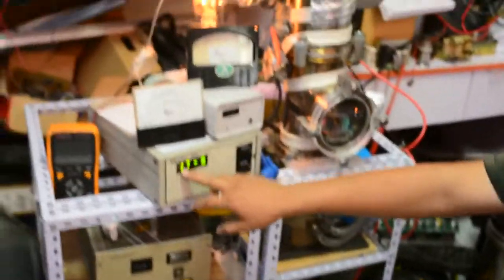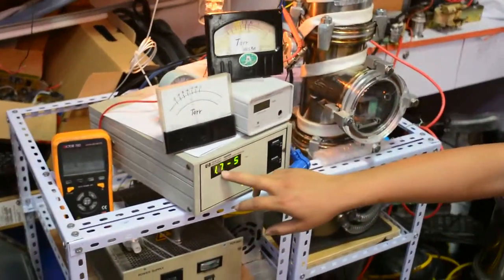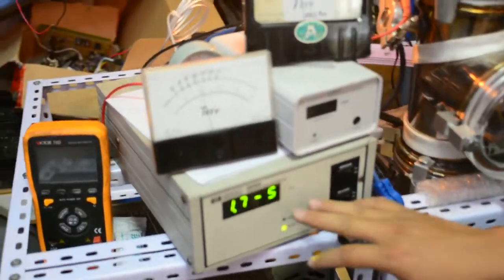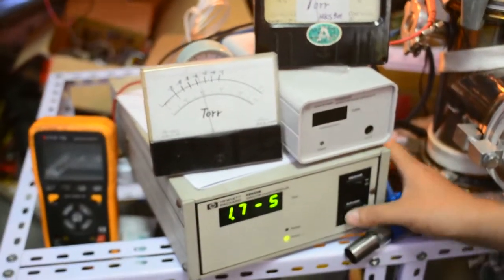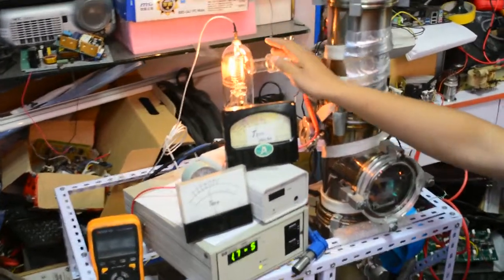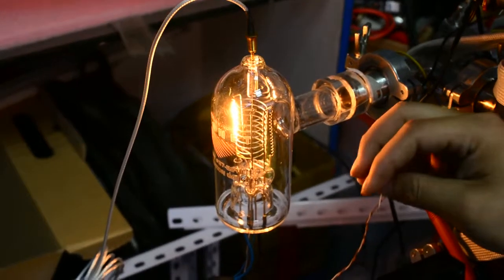Now it is dropping to 1.7 to the minus fifth torr. Then I will show you the gas operation of the vacuum gauge. Basically, this ionic gauge is basically a triode vacuum tube.